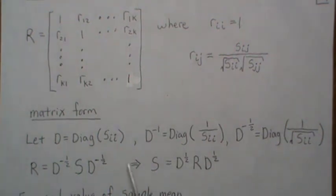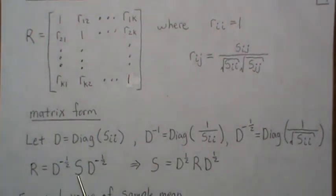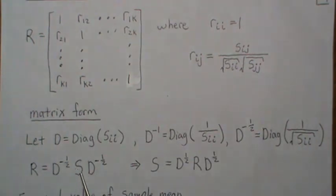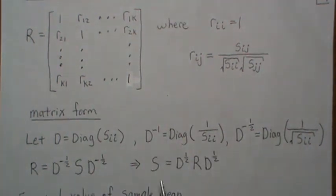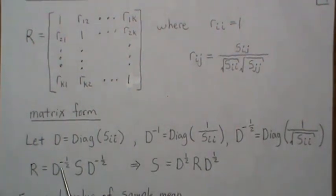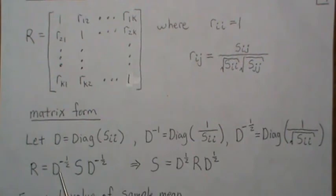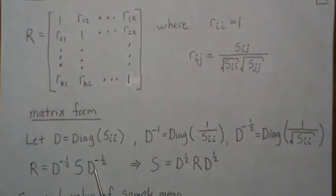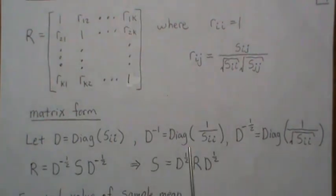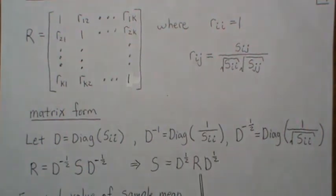It becomes quite easy to show that the correlation matrix R equals D^(-1/2) times the sample covariance matrix S times D^(-1/2). When you dot S with these, it ends up dividing by each of the standard deviation elements. This implies that if you left-multiply by D^(1/2) and right-multiply by D^(1/2), you can represent the sample covariance matrix S in terms of the sample correlation matrix R.